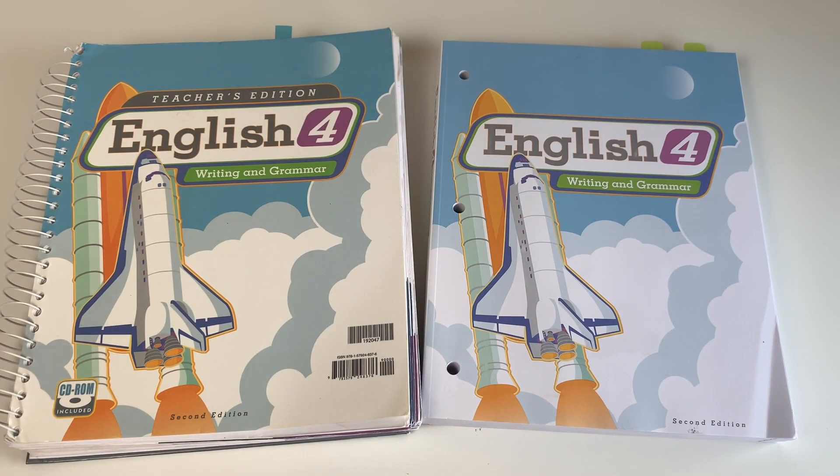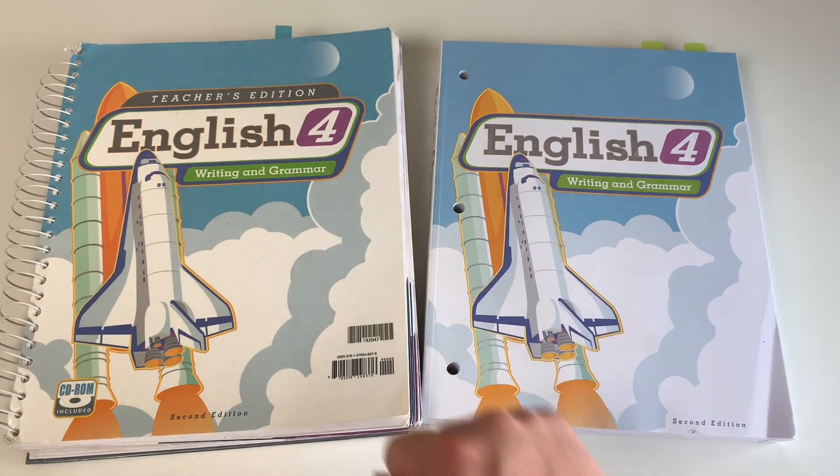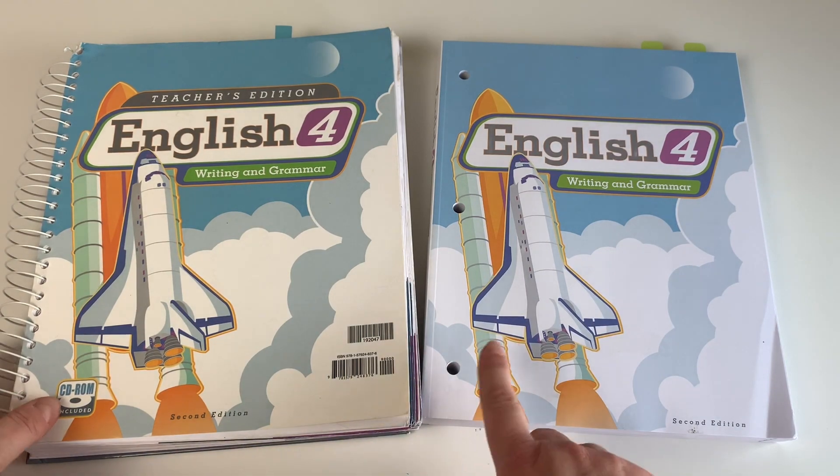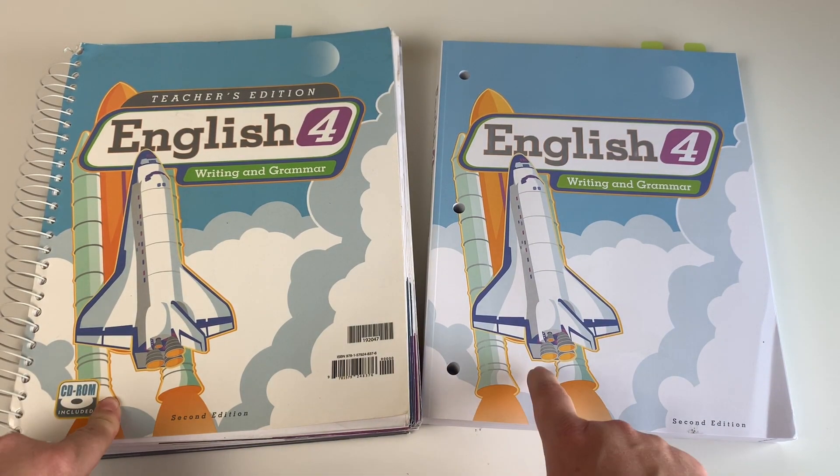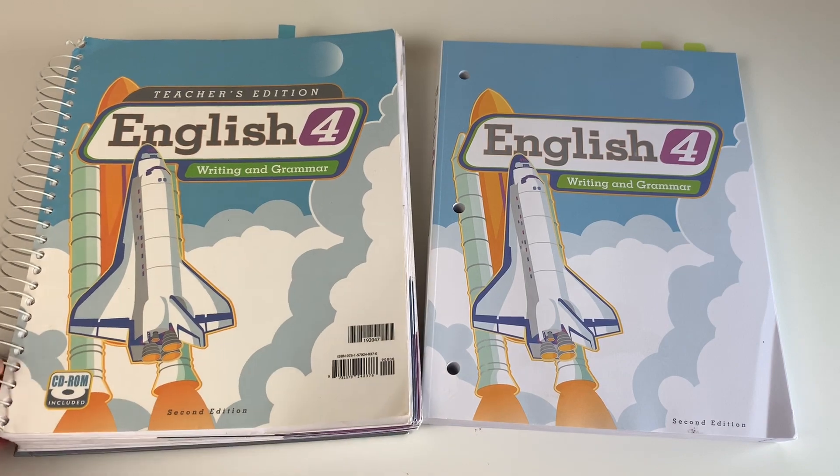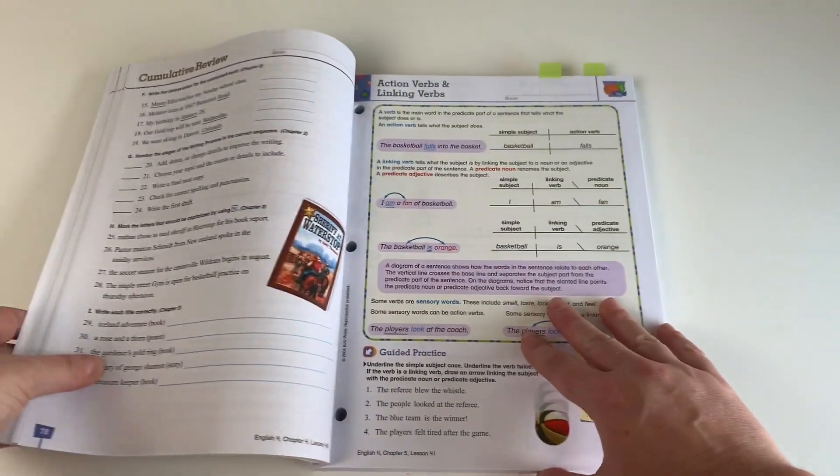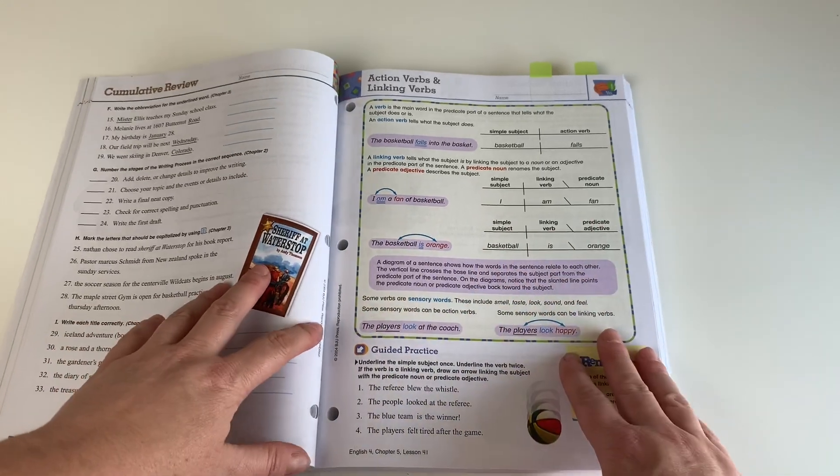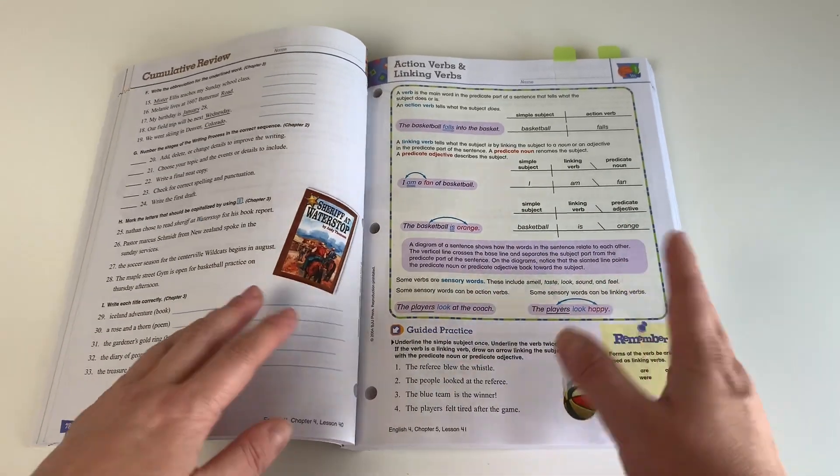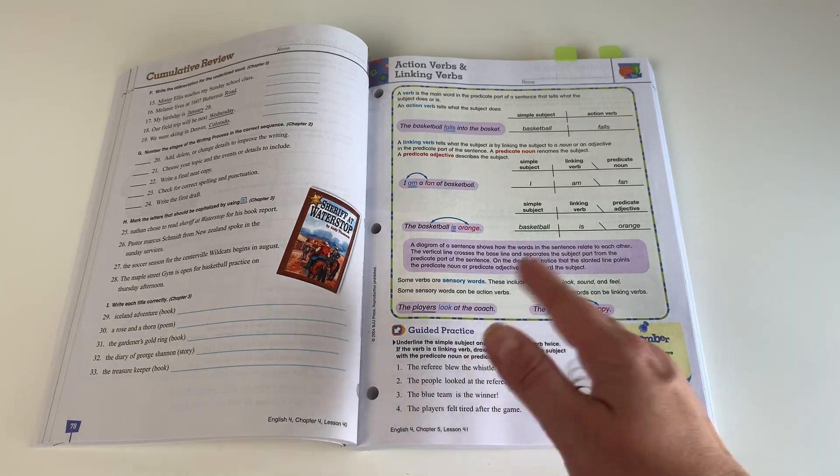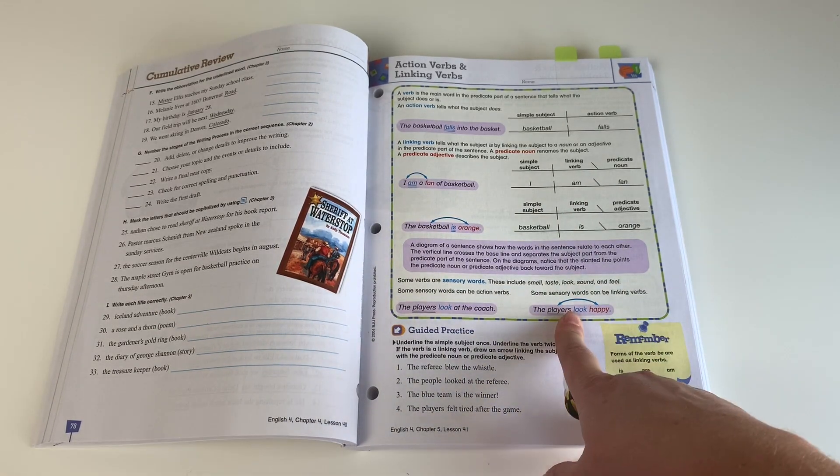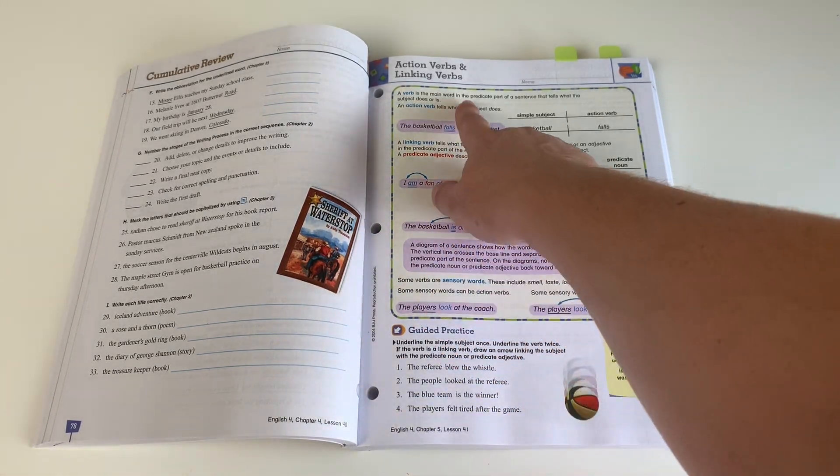For language arts this year, she'll be using English for Writing and Grammar by BJU Press. My oldest daughter has used this program for several years and we just love the way that it lays out its language arts. So I'll go ahead and show you inside some of the things we love about it. First, we love that it does a grammar unit followed by a writing unit so it kind of mixes it up throughout the year.